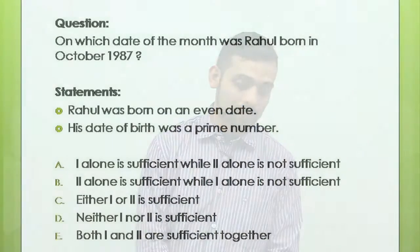Just take a look at your screen, friends. There is a question which says: on which date of the month was Rahul born in October 1987? So I have to get enough information to determine the exact date. The first statement says that Rahul was born on an even date. Now this alone is not sufficient because half the month has even dates.